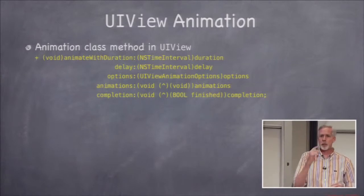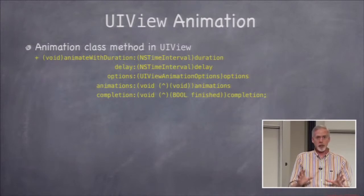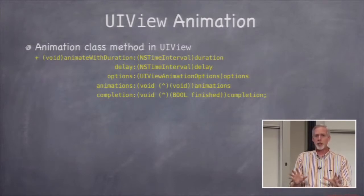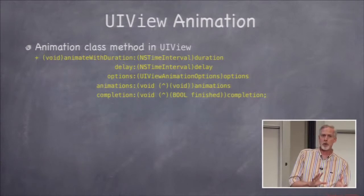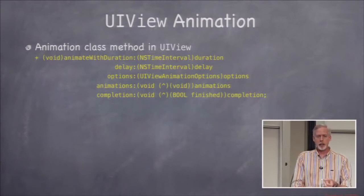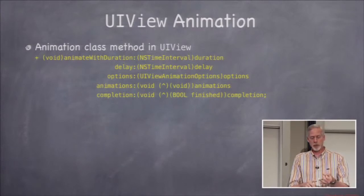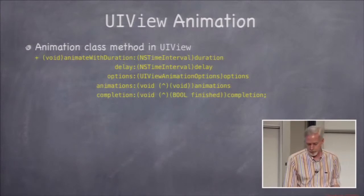There are quite a few options for animating. Then there's the all-important animations argument, which is a block that takes no arguments and has no return value. In that block is where you change frame, center — center and frame are related — and transform and alpha.